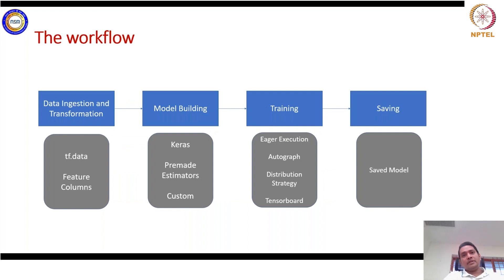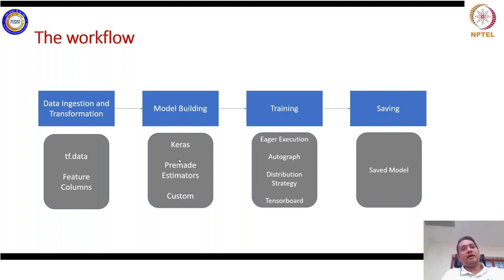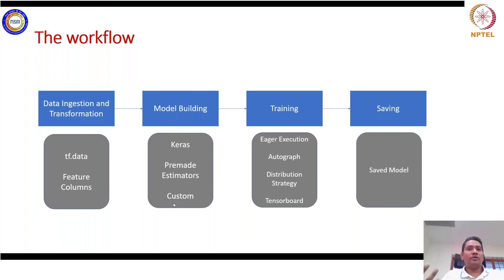The TF2 workflow is similar to PyTorch. You start by feature engineering and transforming or normalizing your data, then define and build the model. You can use Keras; estimators are not recommended for TensorFlow 2 after version 2.5. You can also use APIs to custom-build models. Keras covers roughly 90% of the models needed. For more control over model building, you can use custom model-building APIs.